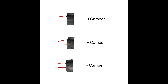Starting off with probably the most talked-about suspension angle — camber. Camber is basically when you look at your tire from the front view: it's either tilting your tire towards the car or away from the car. If you tilt the top of the tire away from the car, that's called positive camber. If you tilt the top of your tire towards the car, that's negative camber. This is measured in degrees from vertical, so if your tire is perfectly vertical, that's zero camber.